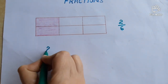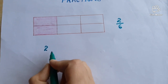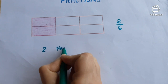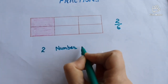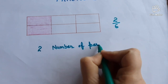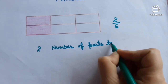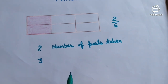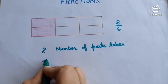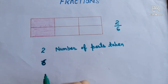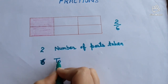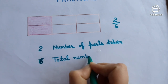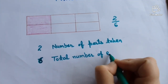Here we have two — what is two here? Two is the number of parts shaded, or the number of parts taken — number of parts taken for which we are writing the fraction. And six is the total number of parts — six is the total number of equal parts that we have in this figure.